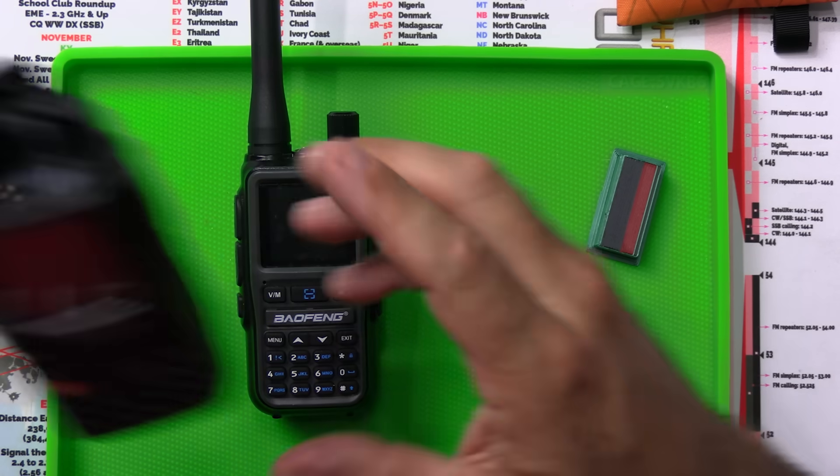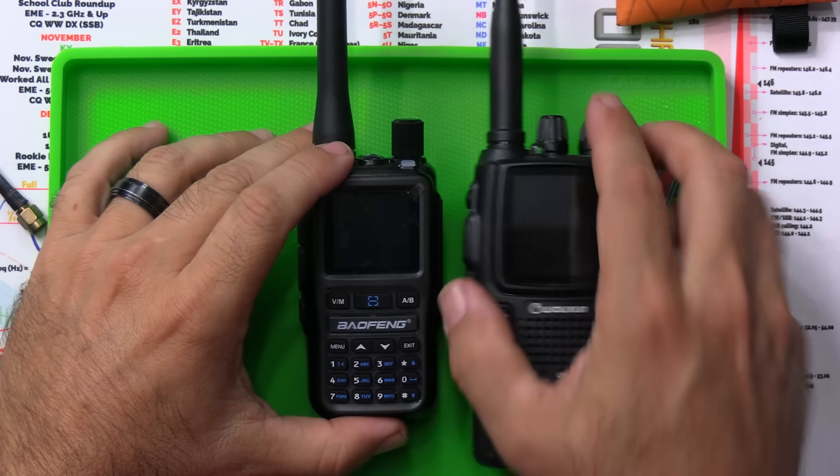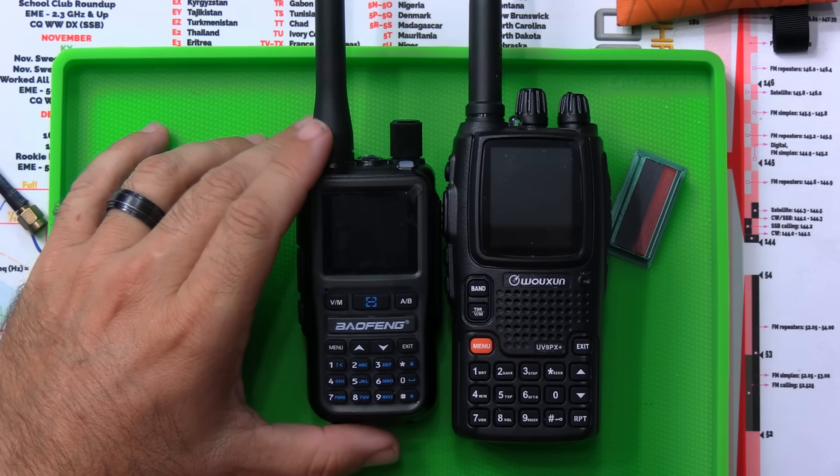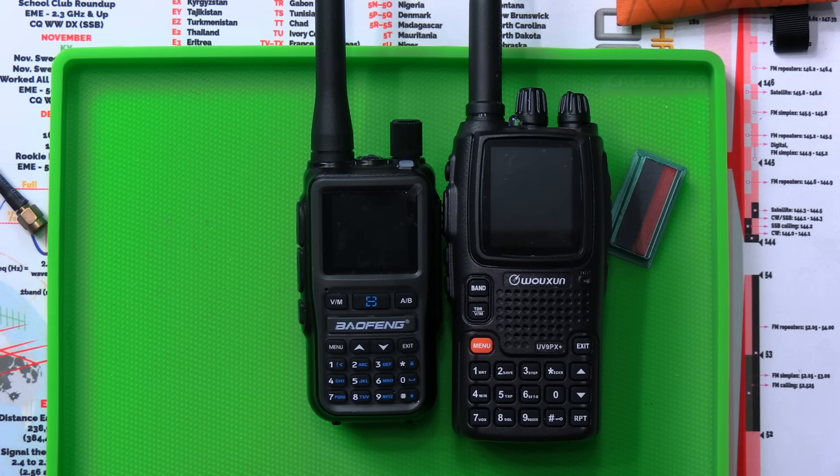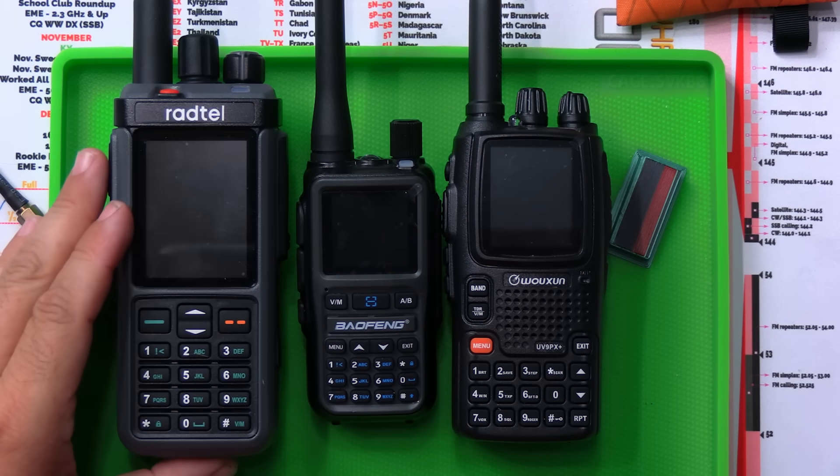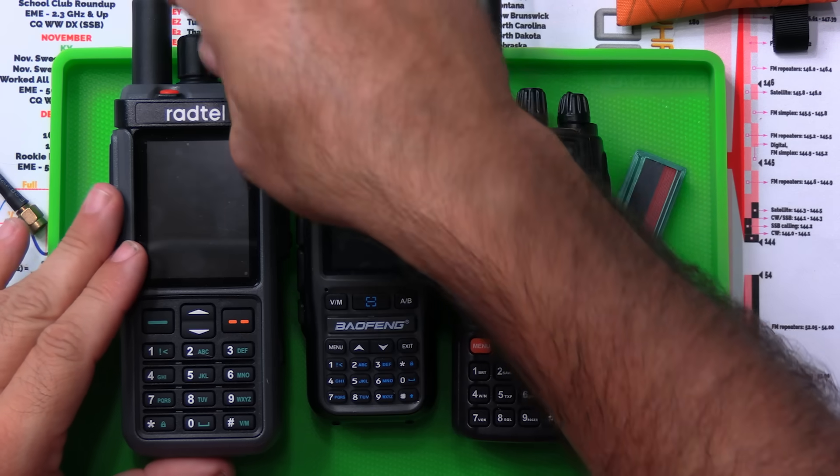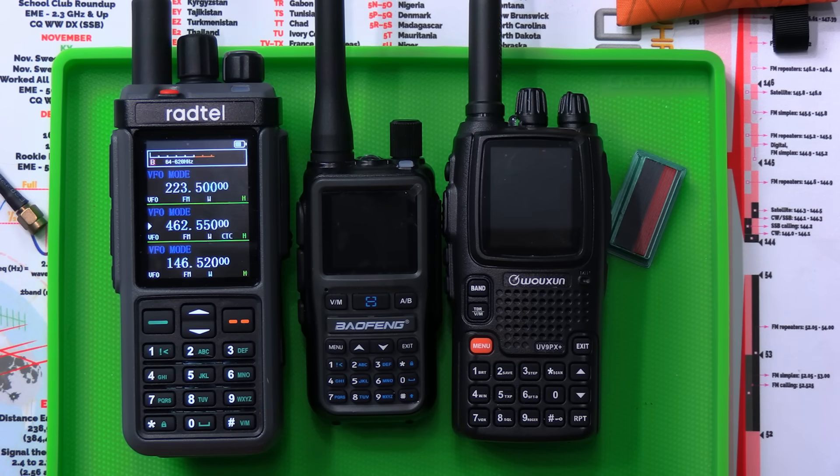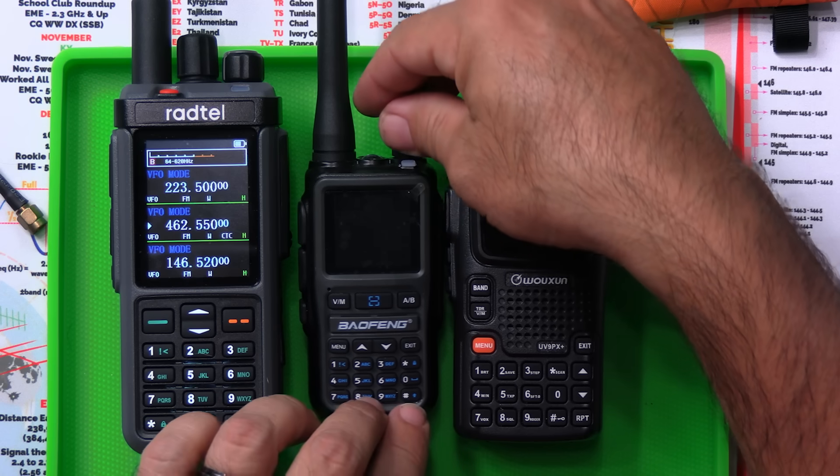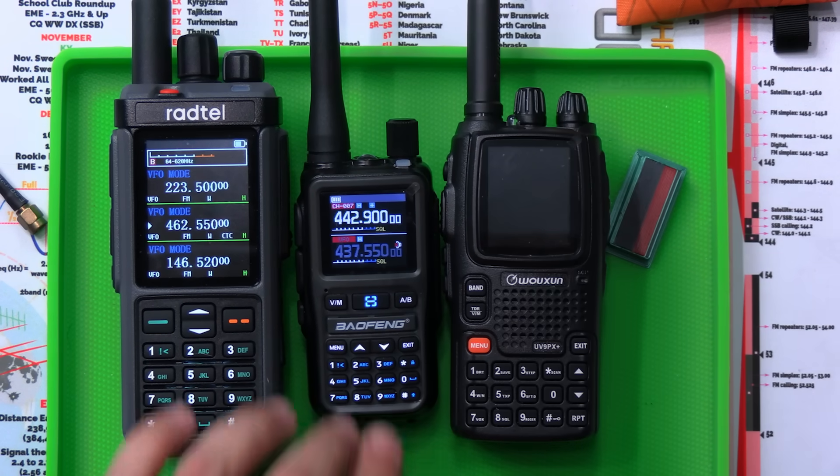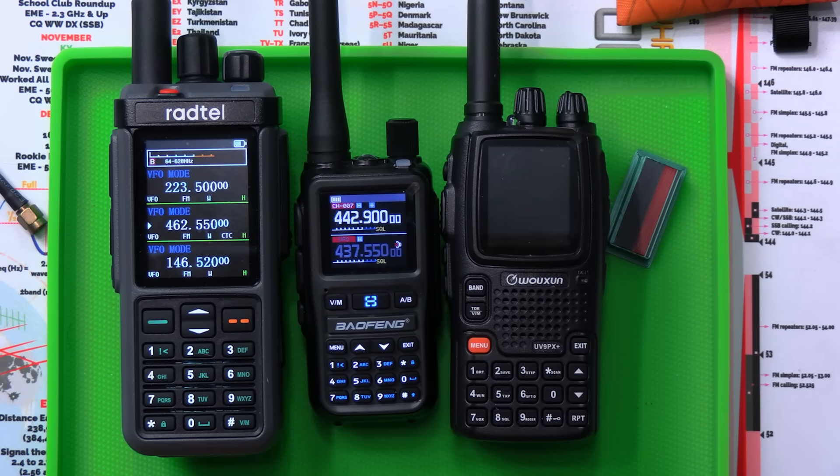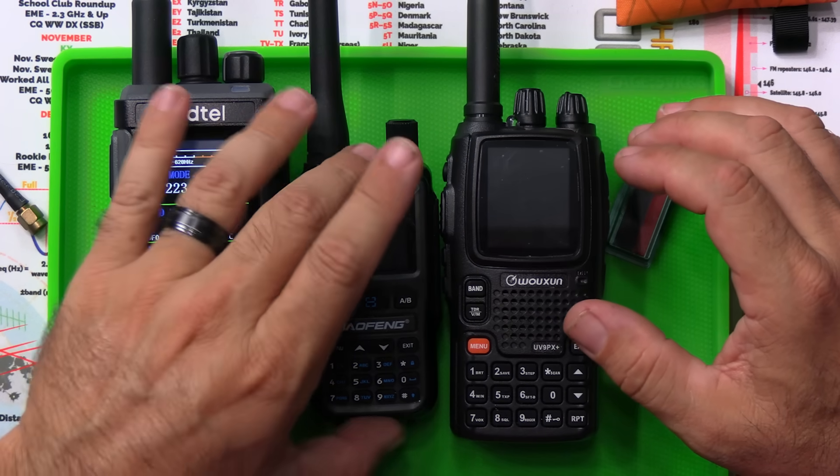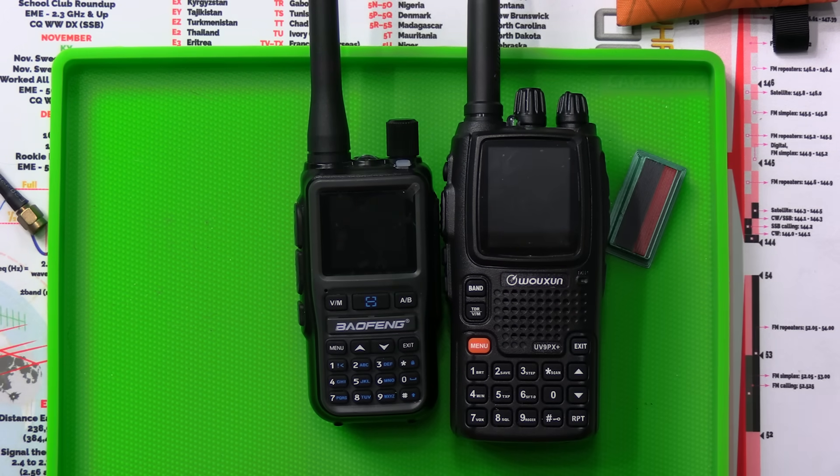First off, I want to show you the size comparison. So this is obviously the Baofeng Mini here in the middle. This is a Waxon UV9 Papa X-Ray from BetterSafe Radio right there. And this is the Radtel 880G, which that radio is bigger than most radios anyway. I really like the size of this thing.